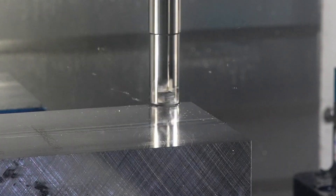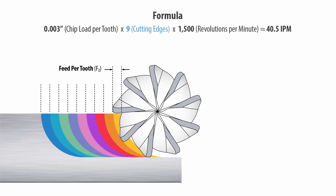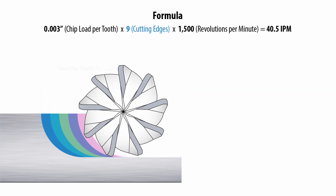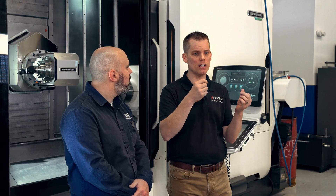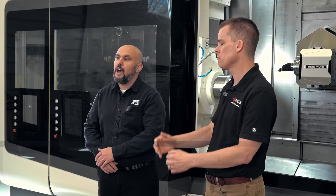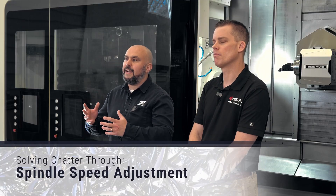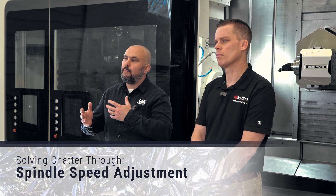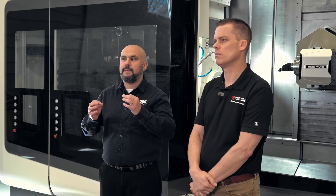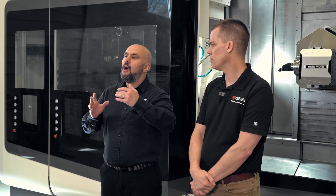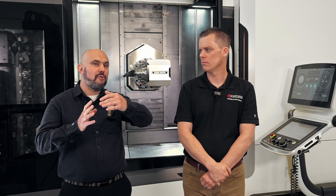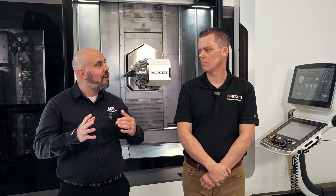Dialing in the right feed per tooth — the right chip load — helps avoid hitting resonance points and developing harmonic vibrations. A huge part of that is spindle speed. If you come across chatter, tweaking the RPM slightly by just 5 or 10 percent can help reduce those harmonics. Often people slow down, but more often than not, speeding up can be advantageous too.